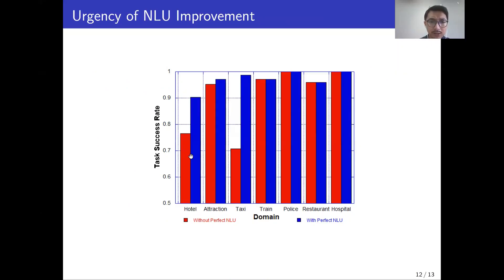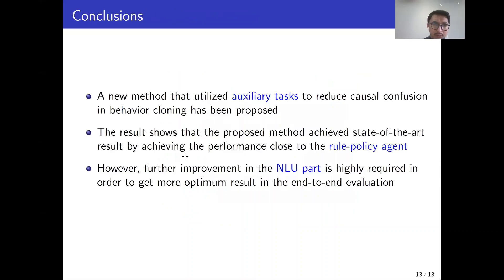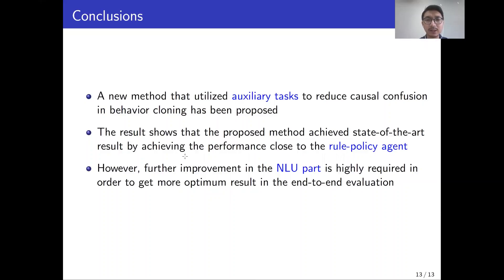This is the comparison of the PPO agent when using perfect NLU versus the imperfect NLU module. As a conclusion, a new method that utilizes auxiliary tasks to reduce causal confusion in behavior cloning has been proposed, and the results show that we can achieve state-of-the-art performance close to the rule-based policy agent.